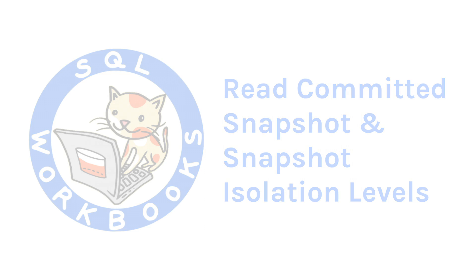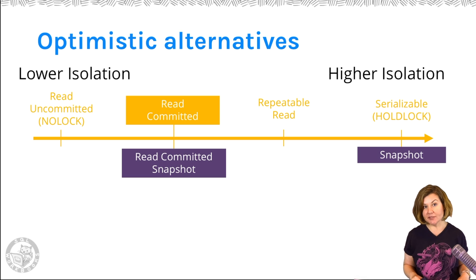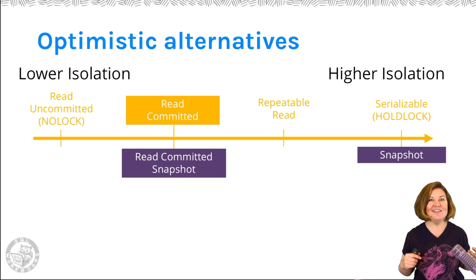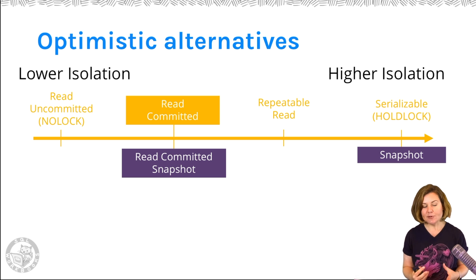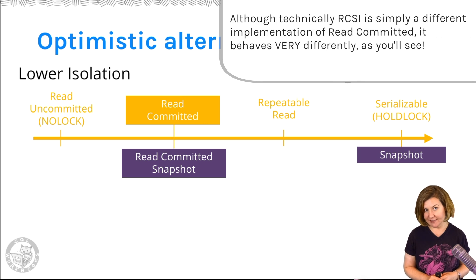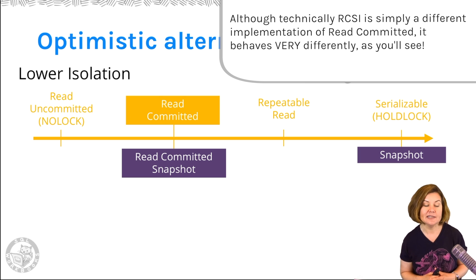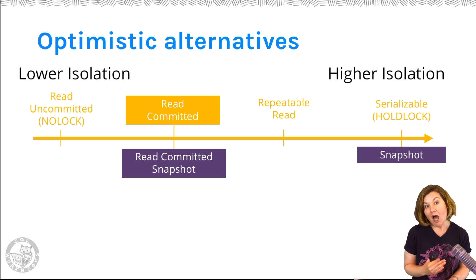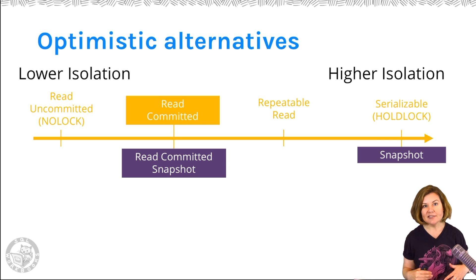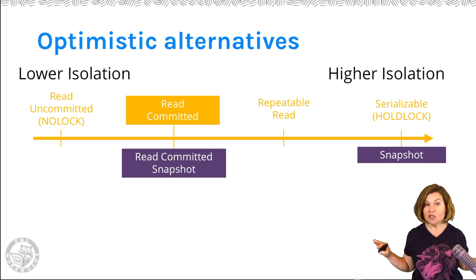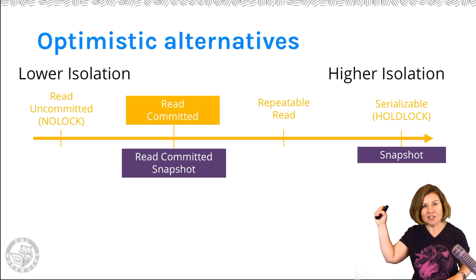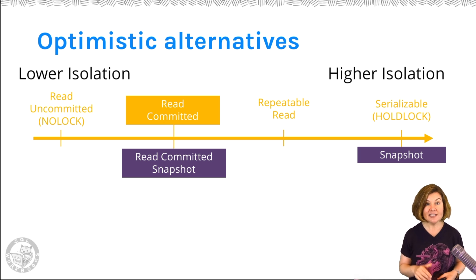Snapshot isolation and read committed snapshot isolation provide a way to solve blocking problems by being more optimistic about how locking works in SQL Server. If you enable read committed snapshot isolation in a database, you are changing the default isolation level from read committed to read committed snapshot, so that folks who connect without specifying an isolation level will use read committed snapshot automatically with no code changes. They don't have to say SET TRANSACTION ISOLATION LEVEL READ COMMITTED SNAPSHOT — it's the default isolation level for the database and it kicks in right away.